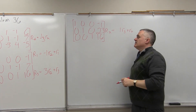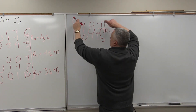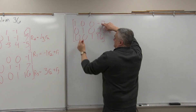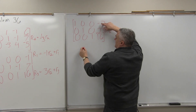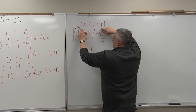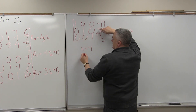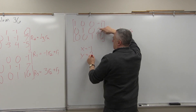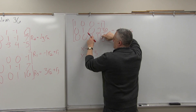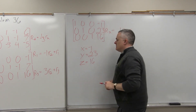I have all the 1s and 0s where they need to be. My solution: the top row says x equals negative 1; the middle row says y equals positive 23; and the bottom row says z equals 16. And that's it.